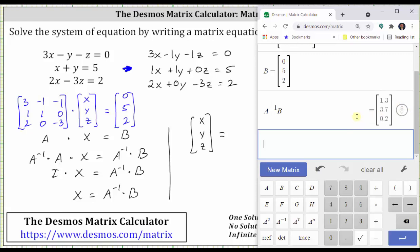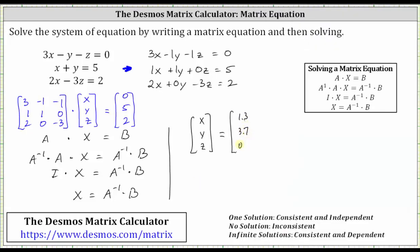We have 1.3, 3.7, and 0.2, which indicates the solution is x equals 1.3, y equals 3.7, and z is equal to 0.2.